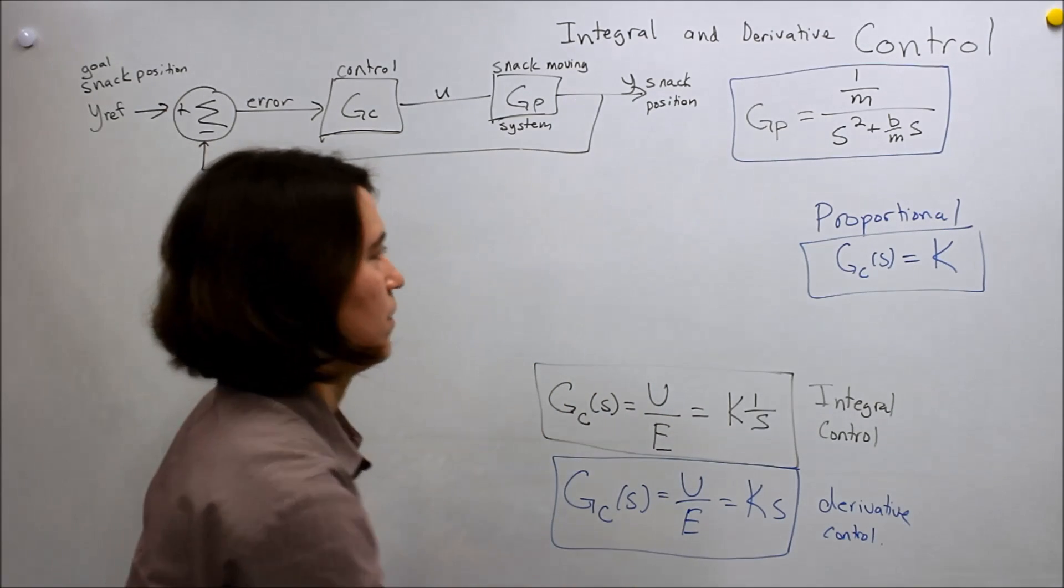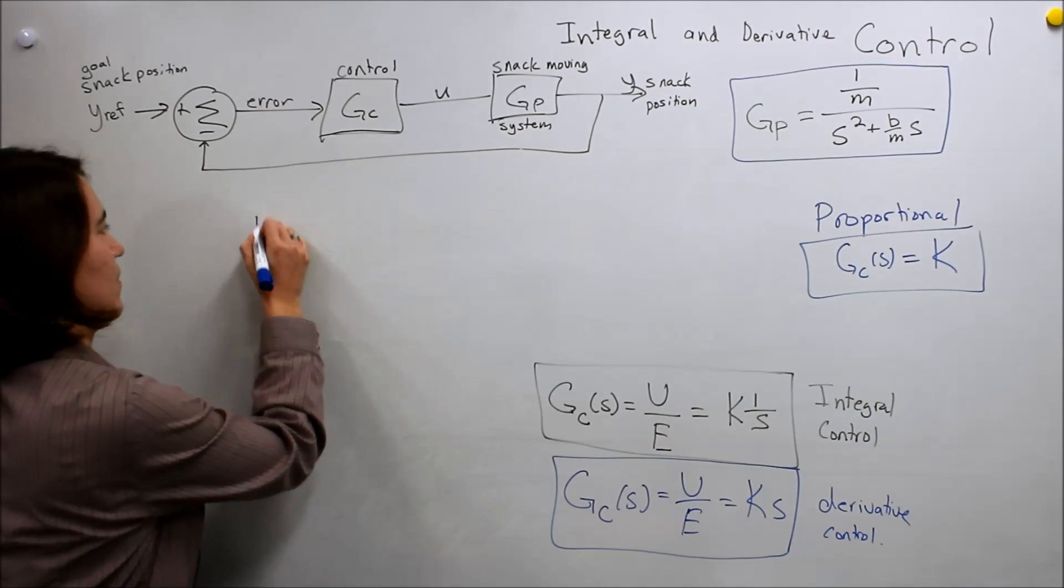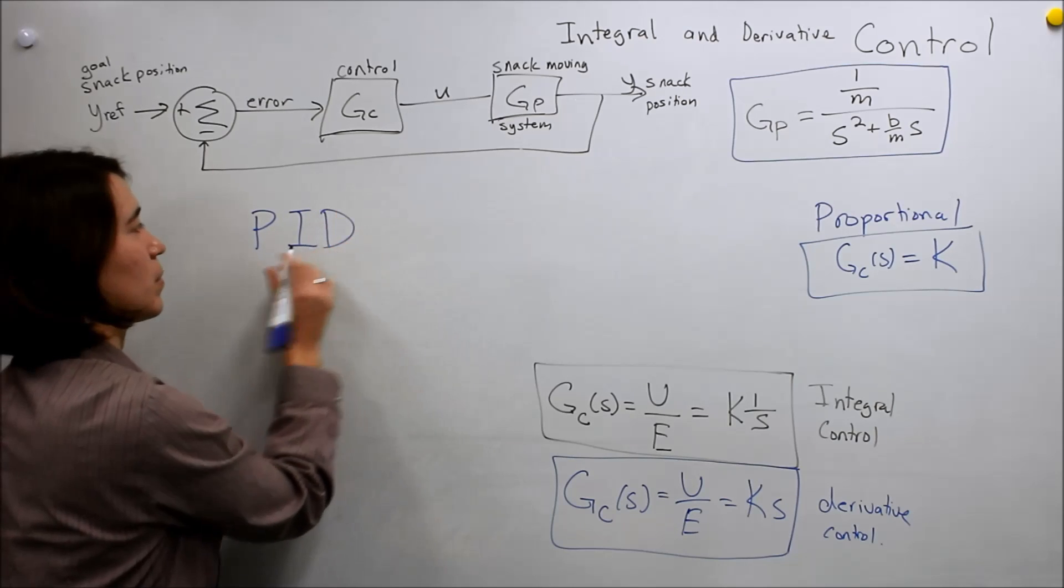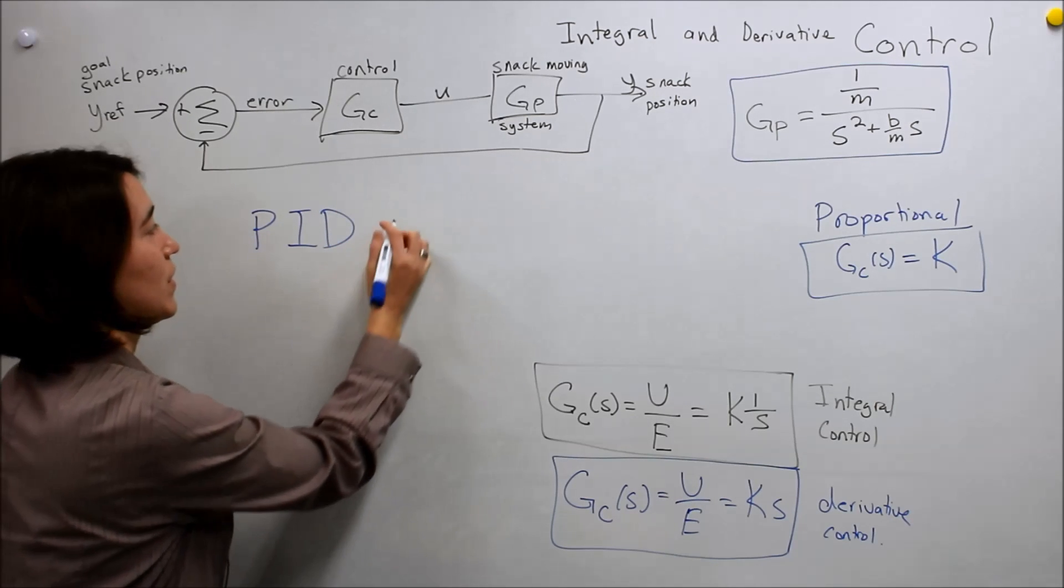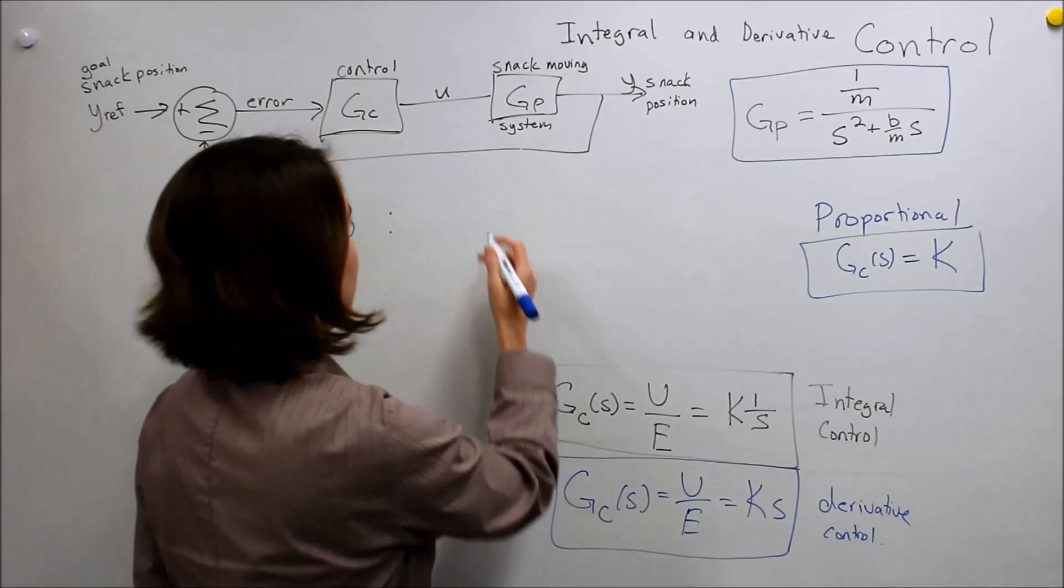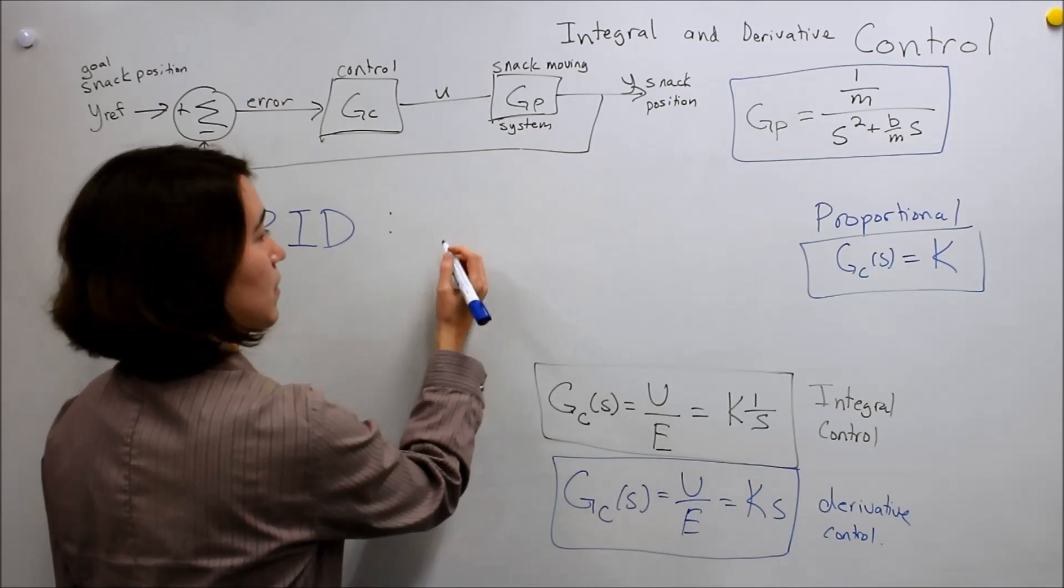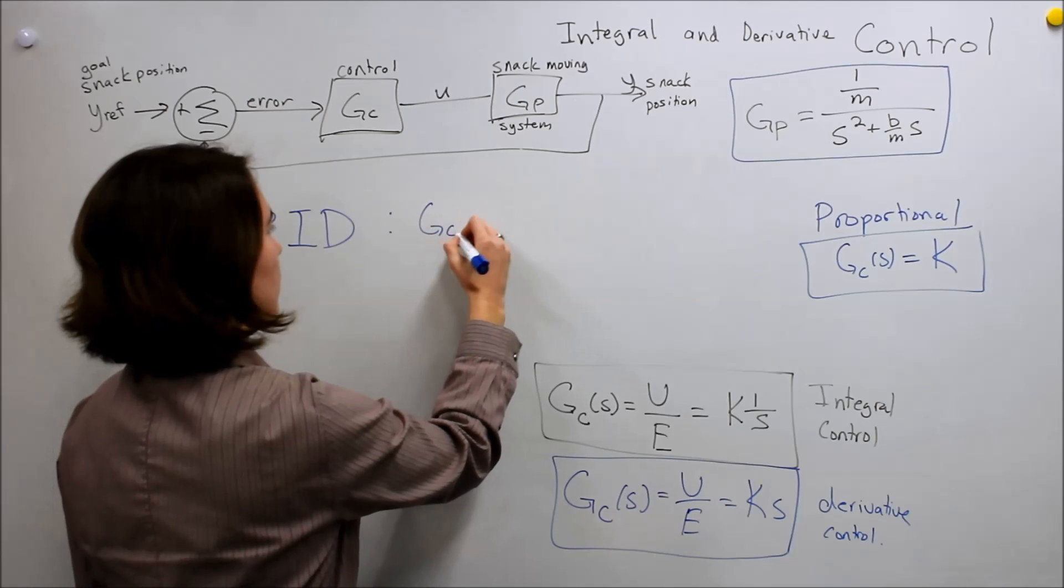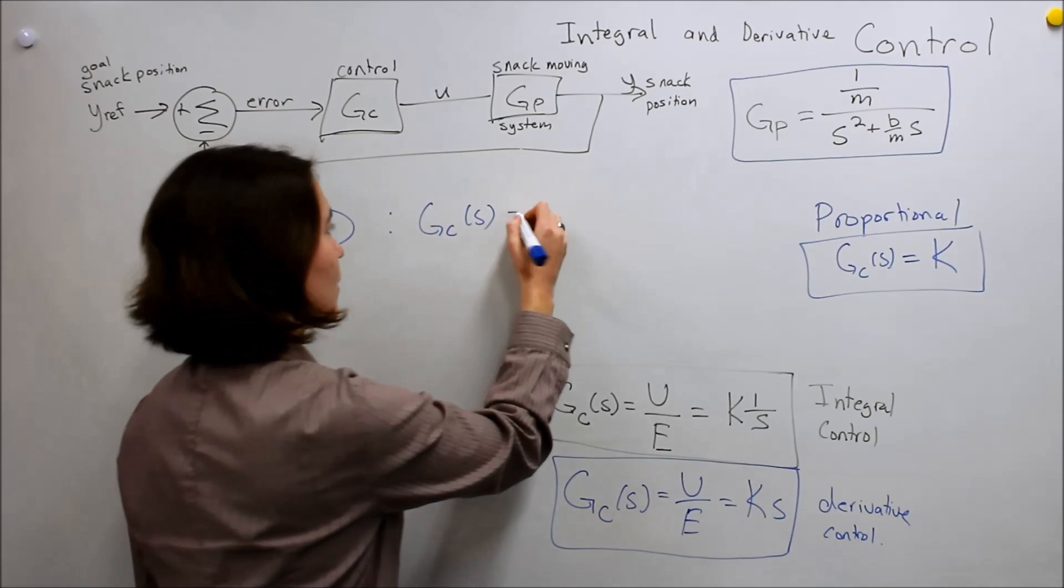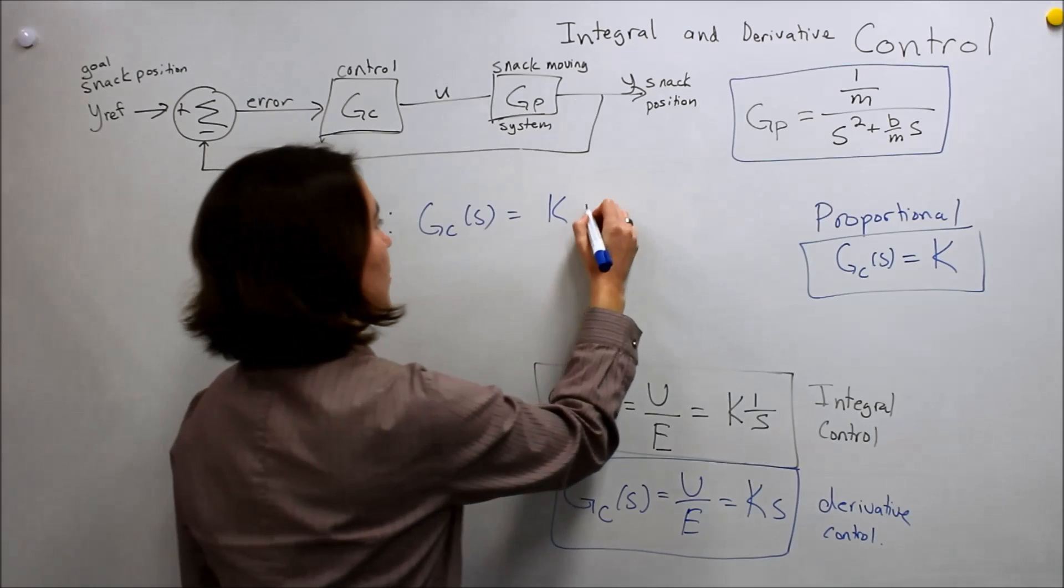And pretty much all that is, is adding these different types of control together. The idea is that PID control, so proportional, integral, derivative control, would simply be the addition of these three different controls together. So if we jump into the Laplace domain, it would simply be K plus...